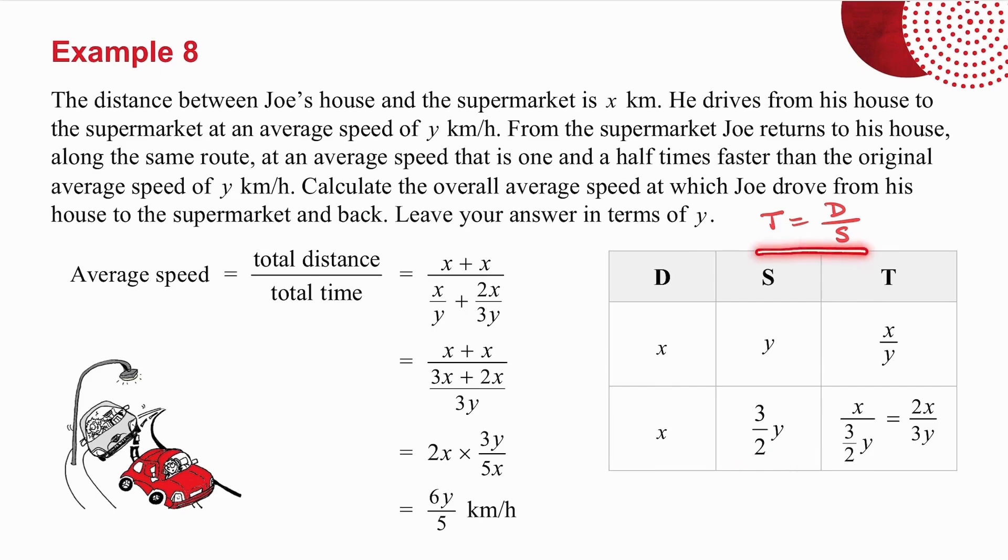Again, I use this formula. So time is distance divided by speed. And when I divide by a fraction, remember I multiply by the reciprocal. So I invert the fraction and I get 2 thirds and I multiply by that. So I get 2x over 3y for the time.